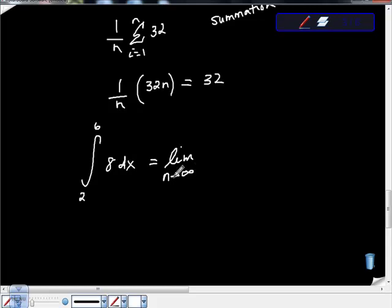Is equal to the limit as the number of subintervals goes to infinity. This is the same. The number of subintervals going to infinity is the same as the norm going to 0 because the norm is the width of the base. So if the width of the base goes to 0, you're going to get a bunch of those bases, right? And you're going to get the limit of 32 as n goes to infinity.